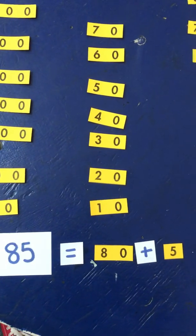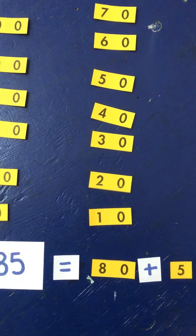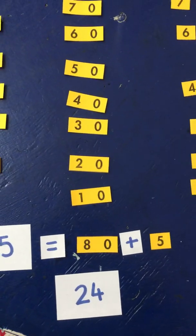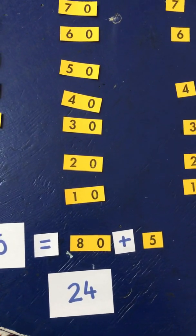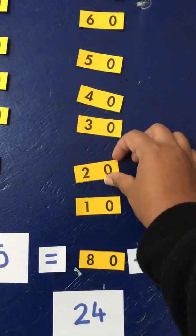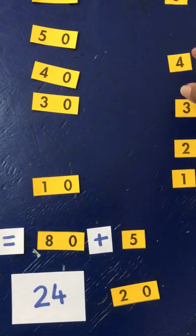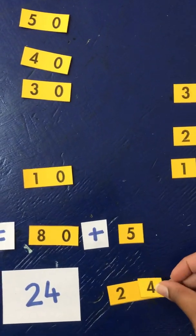Well done if you knew that. The next number we are going to build is 24. What makes up the number 24? We will need a 20 and we need 4. Now we can make the number 24.